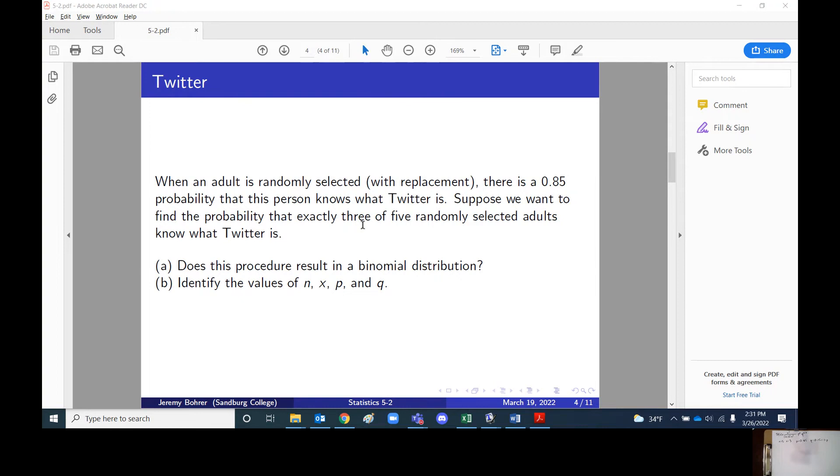There are exactly two categories in this case, either the person knows what Twitter is or they don't. And finally, the probability that we're assuming is constant. So there is a 0.85 probability that any person we choose, any adult we choose will know what Twitter is.